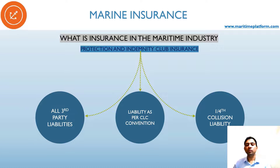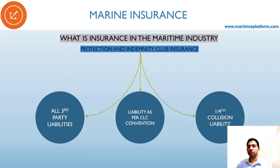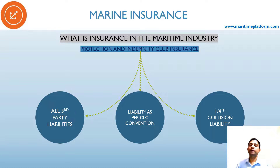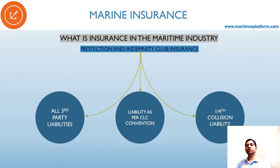The remaining one-fourth of the collision liability is covered by the protection and indemnity club insurance. So to recap: total collision cost was $12. Two-thirds — as per the court — was assigned to our ship, that is $8. Out of $8, three-fourths ($6) will be covered by hull and machinery, and one-fourth collision liability ($2) will be covered by the protection and indemnity. That's how the calculation works.